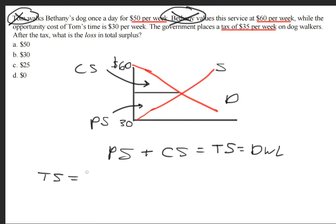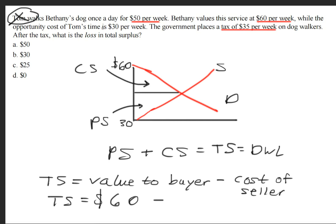We can also write this in a different terminology. The total surplus can also be thought of as the value to the buyer minus the cost that the seller had to pay. So in this situation here, we get that the total surplus, so the value to the buyer, the buyer was Bethany. And that was $60. The cost to the seller, well, Tom's time, it cost him $30 per week. So the cost was $30. So we get that the loss in total surplus was $30. Answer choice B.